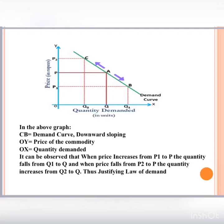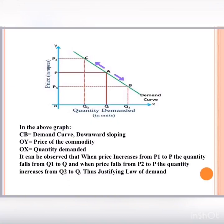Looking at the graph, the demand curve is downward sloping because of the change in price. When the price increases from P1 to P, the quantity shifts from Q1 to Q — showing that when price increases, demand decreases. On the other hand, when price falls from P2 to P, quantity increases from Q2 to Q — showing that when price falls, demand increases. This confirms the demand curve is based on the law of demand.